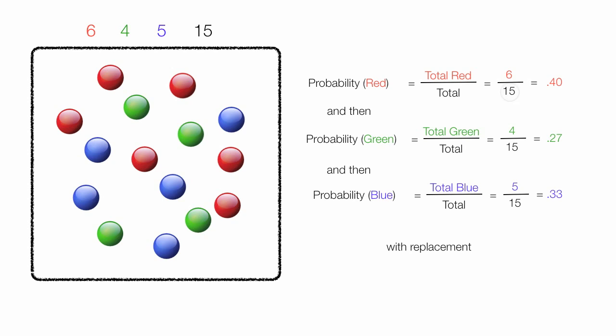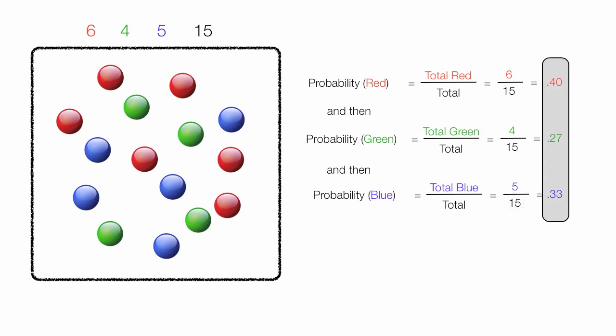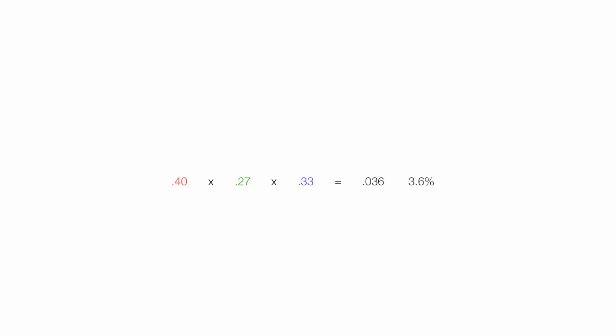With replacement, the denominator always remains the same — in this case, it's always 15. I take all these probabilities and multiply them together: 0.40 times 0.27 times 0.33, and this is equal to 0.036, or 3.6%. So the probability of picking a red, green, and blue ball with replacement is 3.6%.